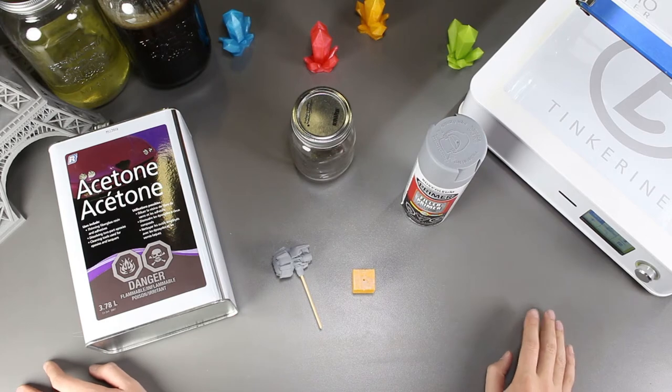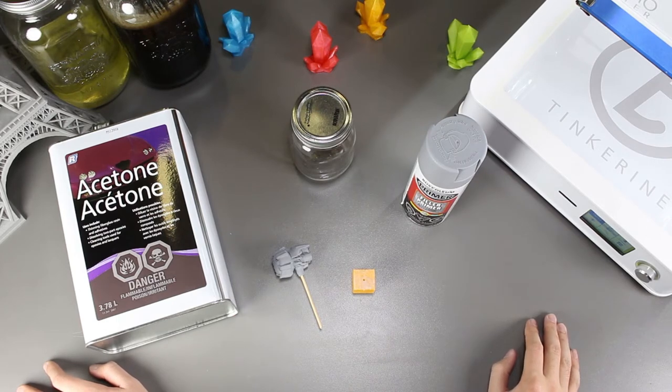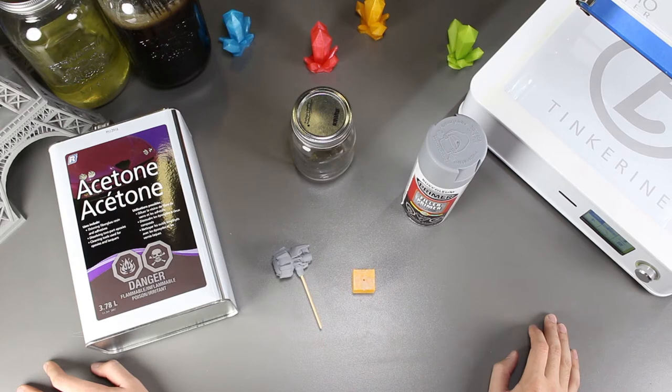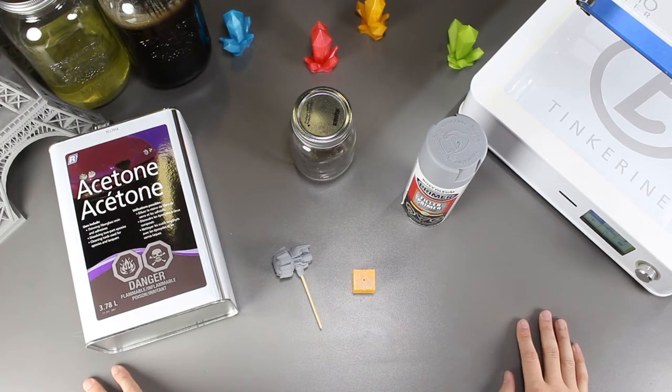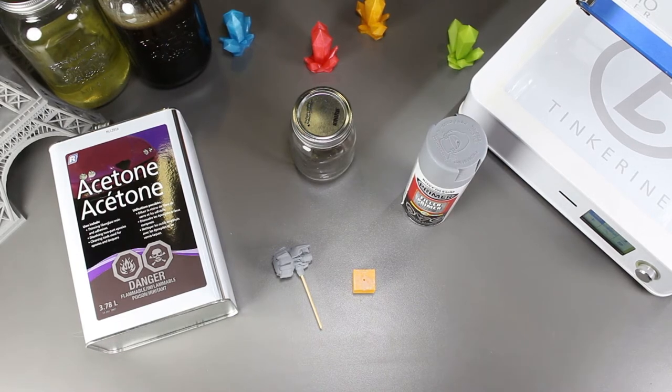Instead of just putting the PLA model inside a jar and waiting for it to smooth out the PLA, which that experiment failed, this time we will spray a layer of primer on it first and then place it into the jar to vapor smooth it with acetone.